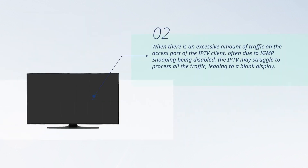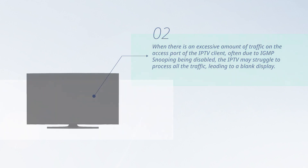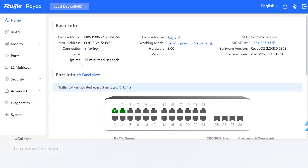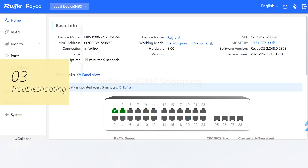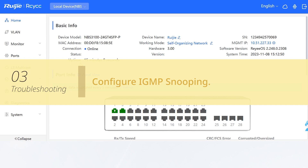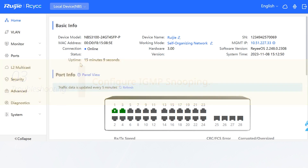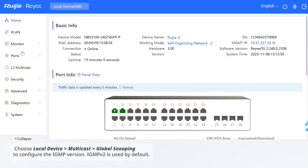When there is an excessive amount of traffic on the access port of the IPTV client, often due to IGMP snooping being disabled, the IPTV may struggle to process all the traffic, leading to a blank display. To resolve the issue, configure IGMP snooping. Choose Local Device > Multicast > Global Snooping to configure the IGMP version.